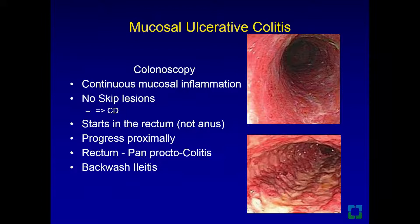Colonoscopy with tissue biopsies is performed to confirm the diagnosis with histopathological evaluation. During colonoscopy, you will find continuous mucosal inflammation — there are no skip lesions, as those are features of Crohn's disease. It usually starts in the rectum and progresses proximally. When colonoscopy is performed, we intubate the ileum and obtain biopsies — sometimes it appears inflamed, described as backwash ileitis, but biopsy shows no evidence of Crohn's disease.